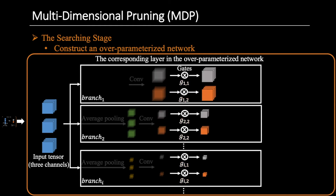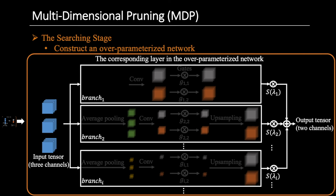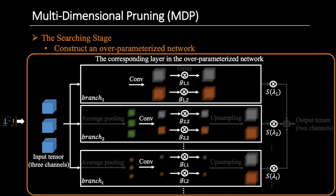Then we perform the convolution operation on the downsampled tensors. We use a gate to scale each channel. These gate values indicate the importance of channels and will be used for channel pruning later. After that, we upsample the gated tensor to its original resolution to ensure there is no shape mismatch for later aggregation. We aggregate the tensors from different branches by using the weighted sum of them. The weights represent the importance of branches. We jointly learn the parameters for the convolution operation, the importance of channels and branches in this stage.